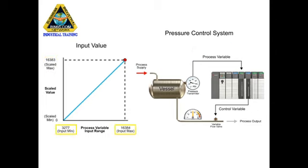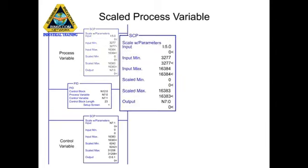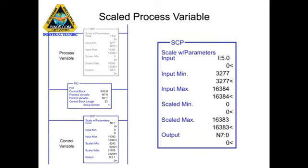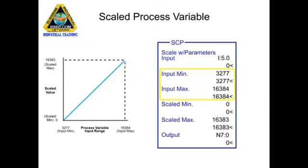The input value is scaled to a range of 0 to 16383 compatible with the PID instruction using the Scale with Parameters instruction, or SCP. The input parameter of the SCP instruction contains the memory address of the analog input module. The input minimum and input maximum are programmed as the smallest and largest values produced by the analog input module.